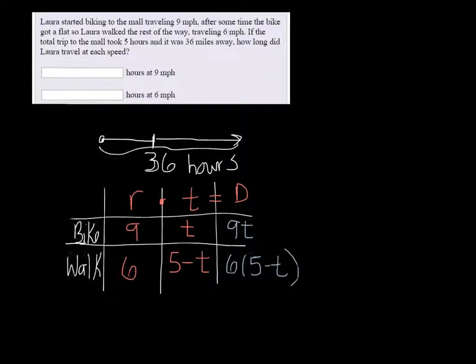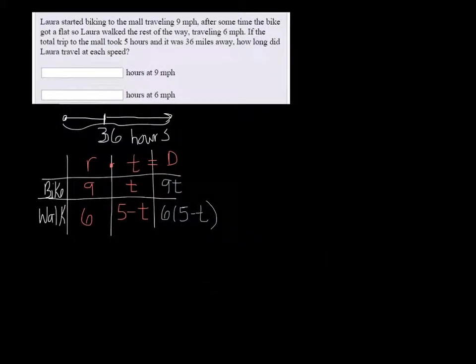Alright, we're ready to make our equation now. We know that if we add the two distances together, the nine t plus the six times five minus t, the total distance was 36. So that has to equal 36.